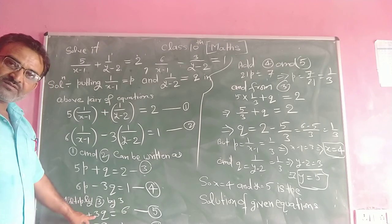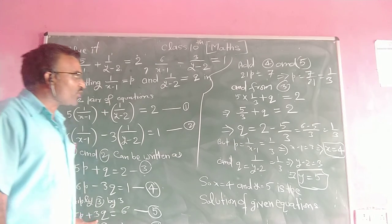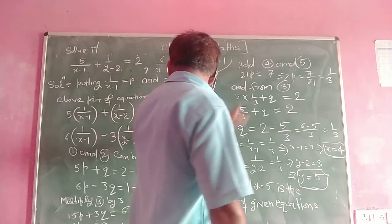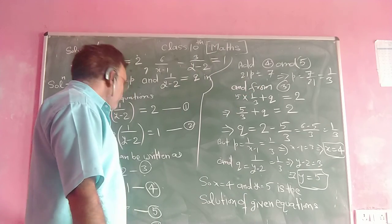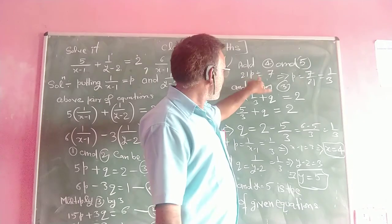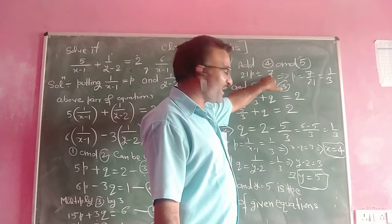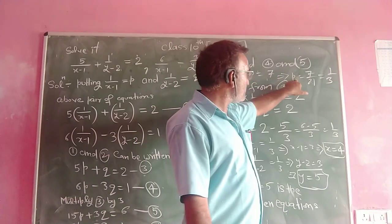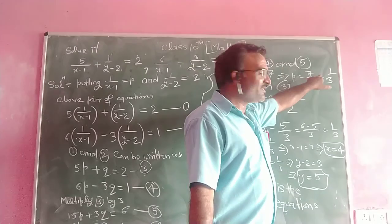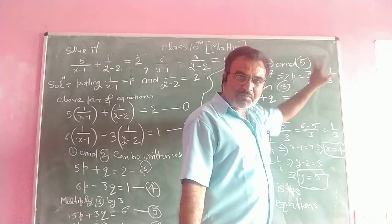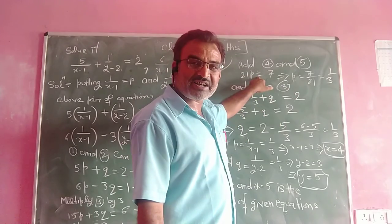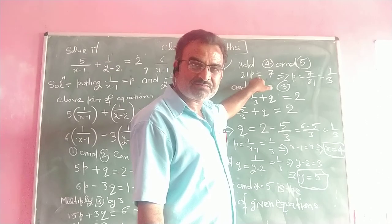Adding equation 5 and equation 4: 15p plus 6p gives 21p, which is equal to 7. Therefore, p equals 7 upon 21, which simplifies to p equal to 1 upon 3.